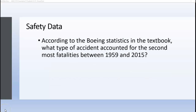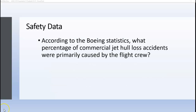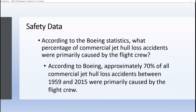The type of accident that accounted for the second most fatalities between 1959 and 2015 was CFIT, or controlled flight into terrain. Boeing also looked at statistics concerning commercial jet hull loss accidents and the primary causes. They found that the primary cause between 1959 and 2015 was the flight crew — approximately 70% of all commercial hull loss accidents were caused by the flight crew, or human error.